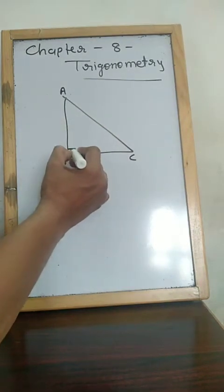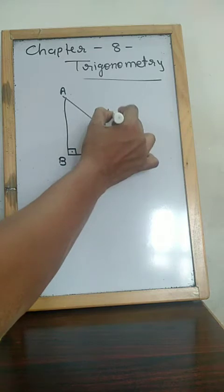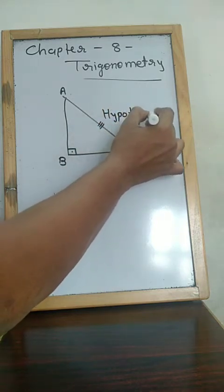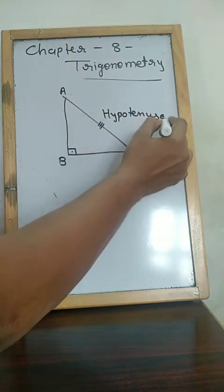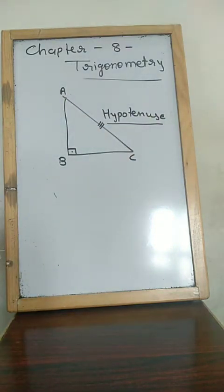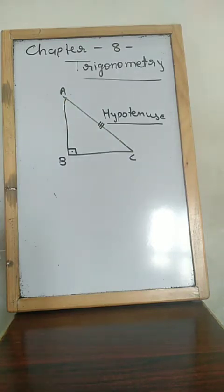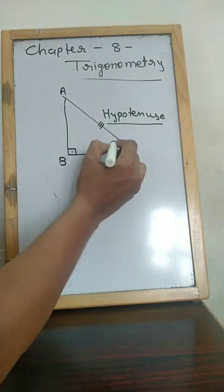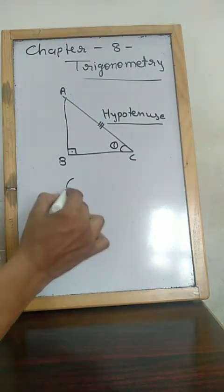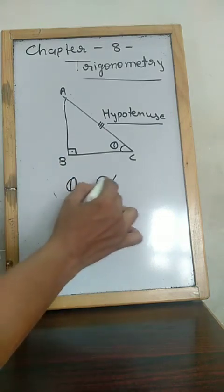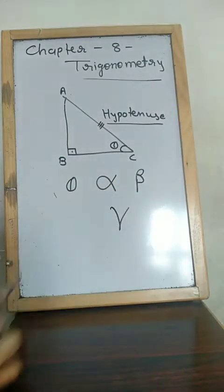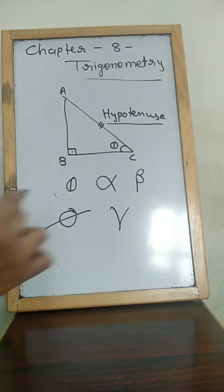The opposite side of the right angle is called the hypotenuse. The opposite side of the right angle we call the hypotenuse. Apart from the right angle, two angles remain here: Angle A and Angle C. Suppose we assume Angle C as theta. This can be called theta, alpha, beta, gamma, or phi.